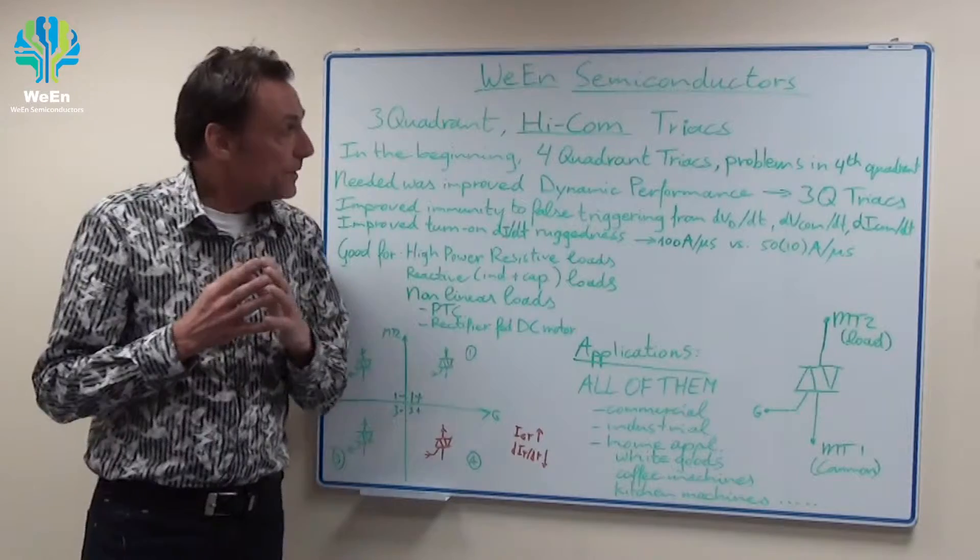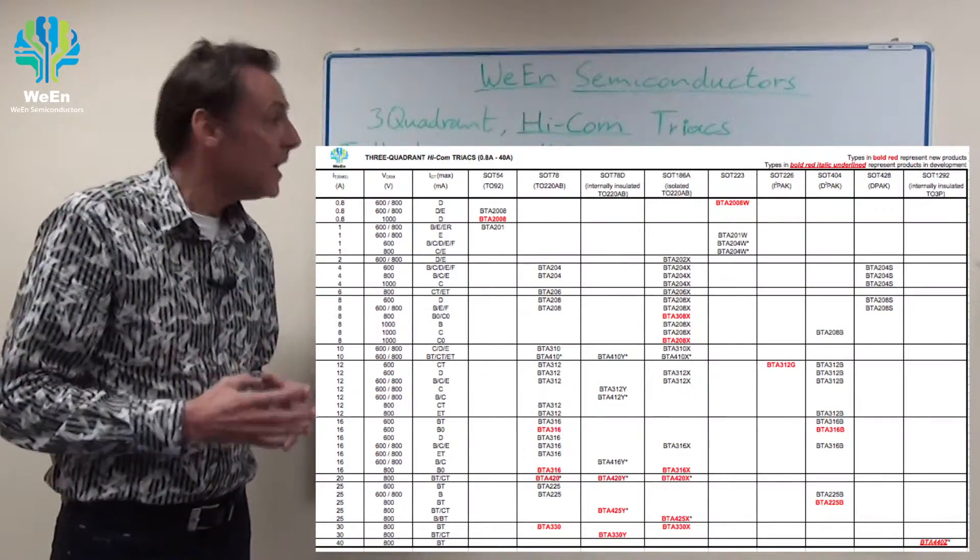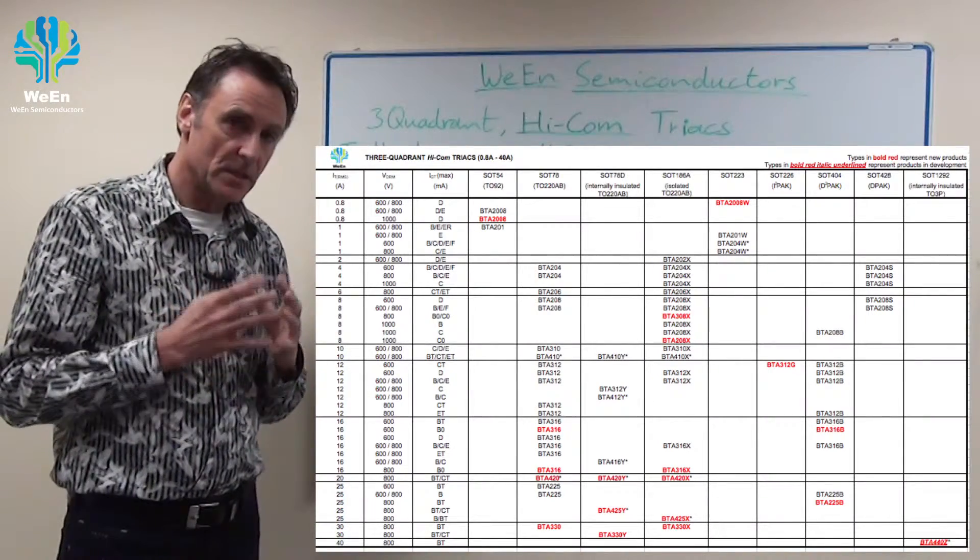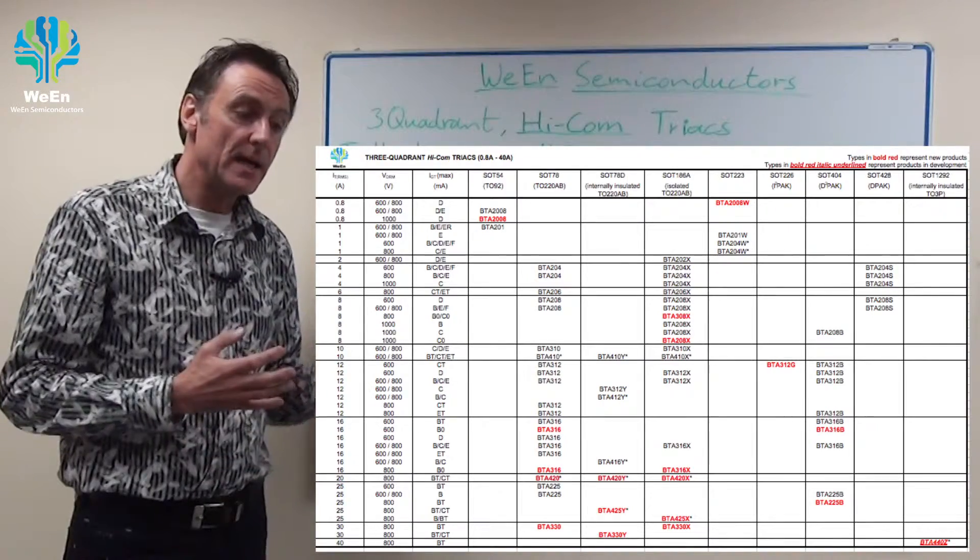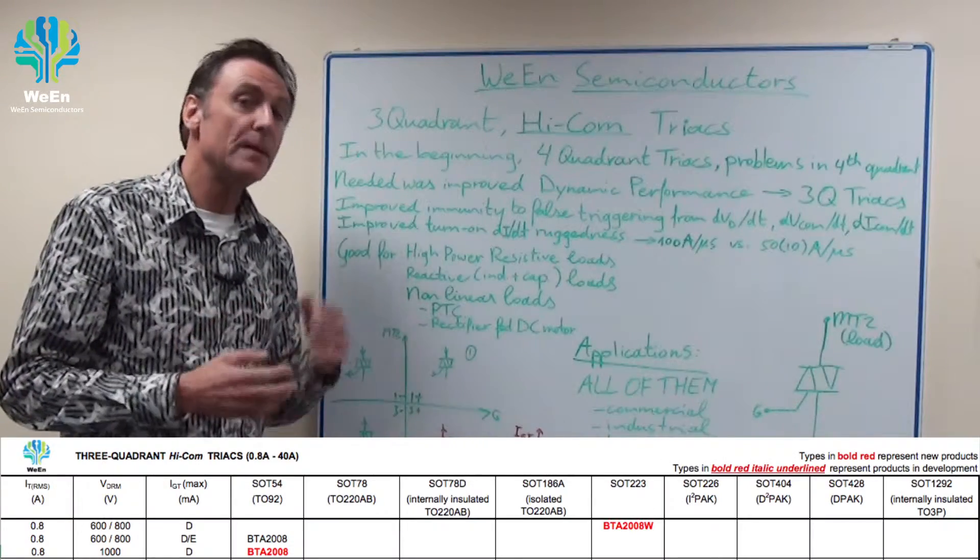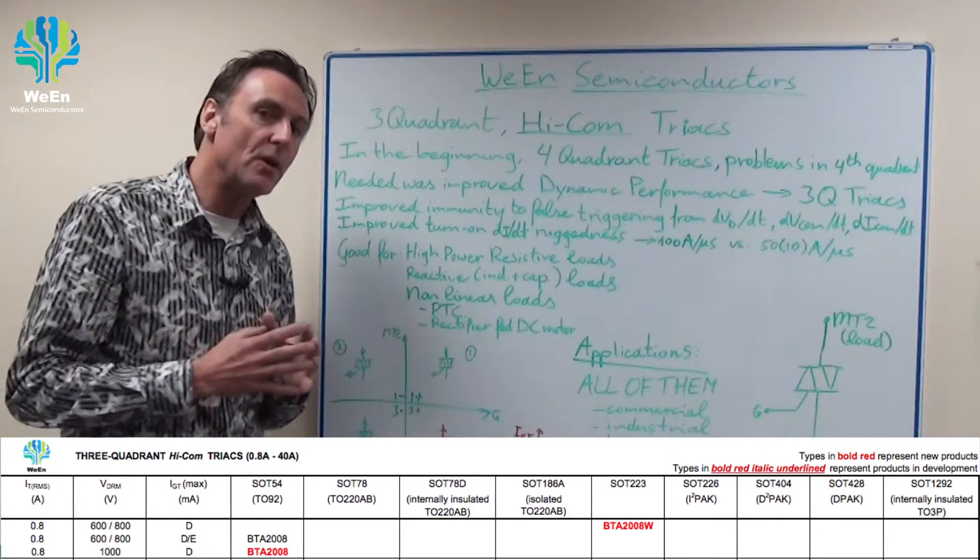The HICOM benefits extend down to the lowest current ratings that we have. WIIN has three quadrant HICOM triacs at 0.8 amp and at 1 amp, and these low power devices are used often for small loads in large appliances.